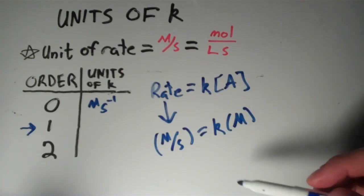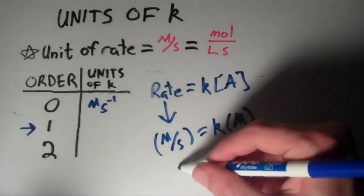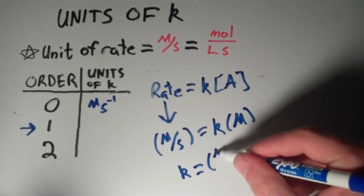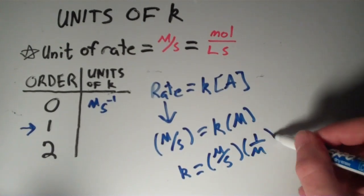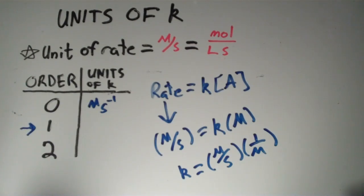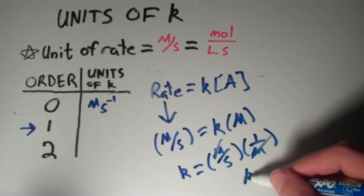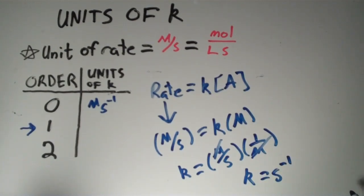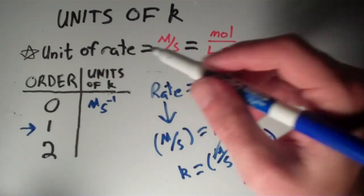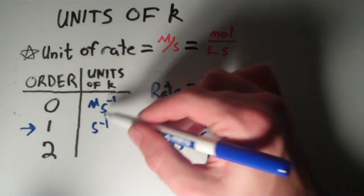We can algebraically solve for K using these units. If I divide both sides by molar, K equals molar per second over molar, or times one over molar. Molar cancels, and we're left with K equals seconds to the minus one, or one over seconds. The units of K for a first-order reaction are reciprocal seconds, s⁻¹.